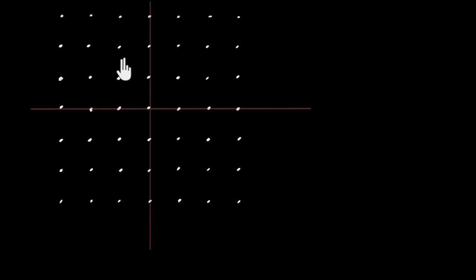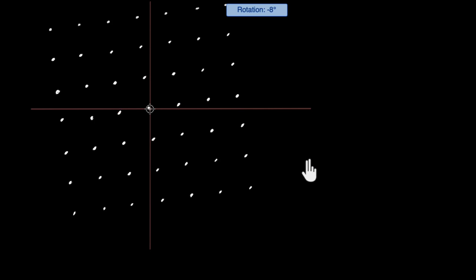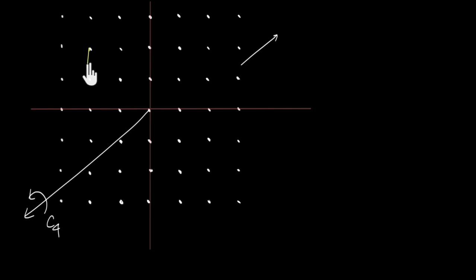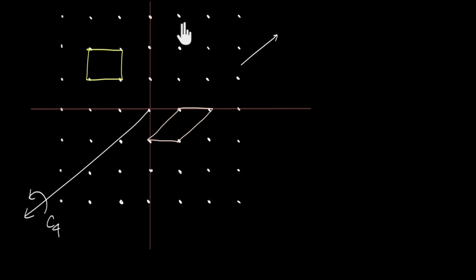Now, if we come back to our original lattice and try to rotate it — and remember that these lattices are infinite in all directions — the lattice will repeat itself after 90 degrees. In other words, this particular lattice has a C4 axis of symmetry. And because a square possesses this symmetry while a parallelogram does not, a square better reflects the global symmetry of the lattice. So we will call this a square lattice.